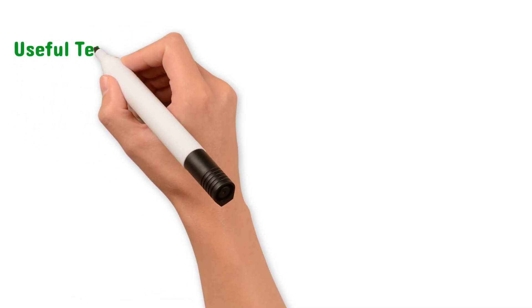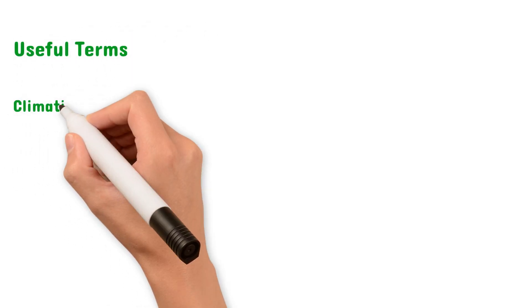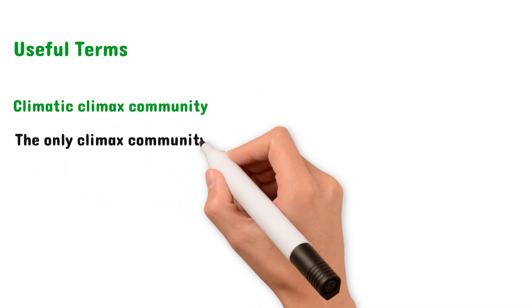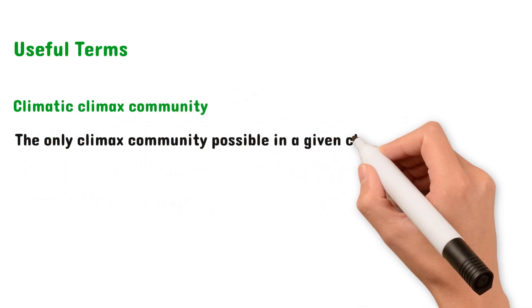Now let's move on to some useful terms. The first term we have to know is climatic climax community. This is the idea that for every given climate, there's only one possible climax community.